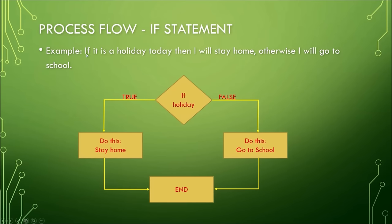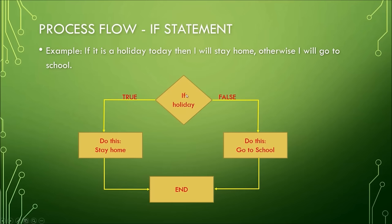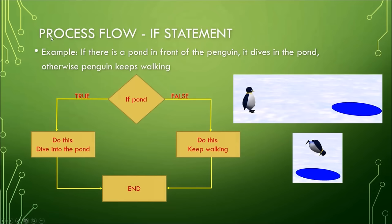Example: if it is a holiday today, then I will stay home; otherwise I will go to school. The condition here is 'holiday.' We create a diamond shape and check if it's a holiday. If true, the action is 'stay home' and the program ends. If false — meaning it is not a holiday — we go to 'go to school' and the program ends.